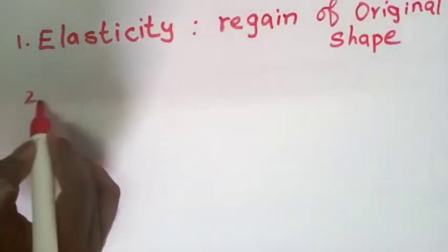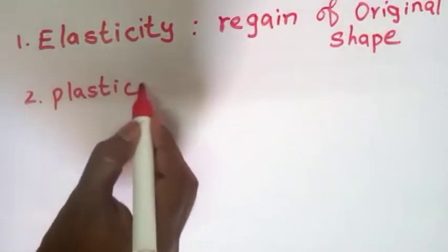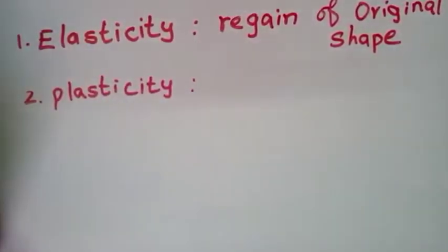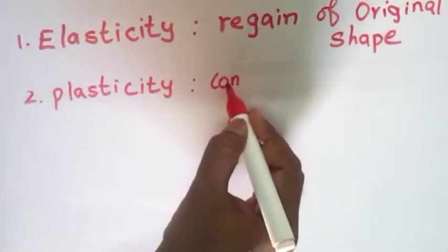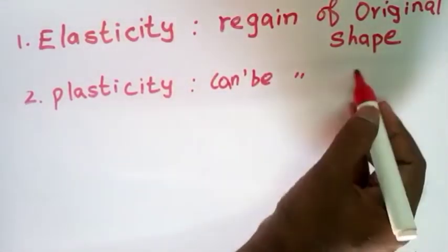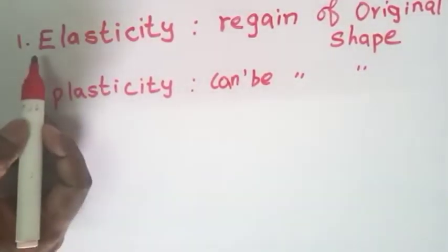Second, plasticity. Apply external load, remove the external load - cannot retain original shape, cannot regain the original shape is known as plasticity. For example, rubber is elasticity.